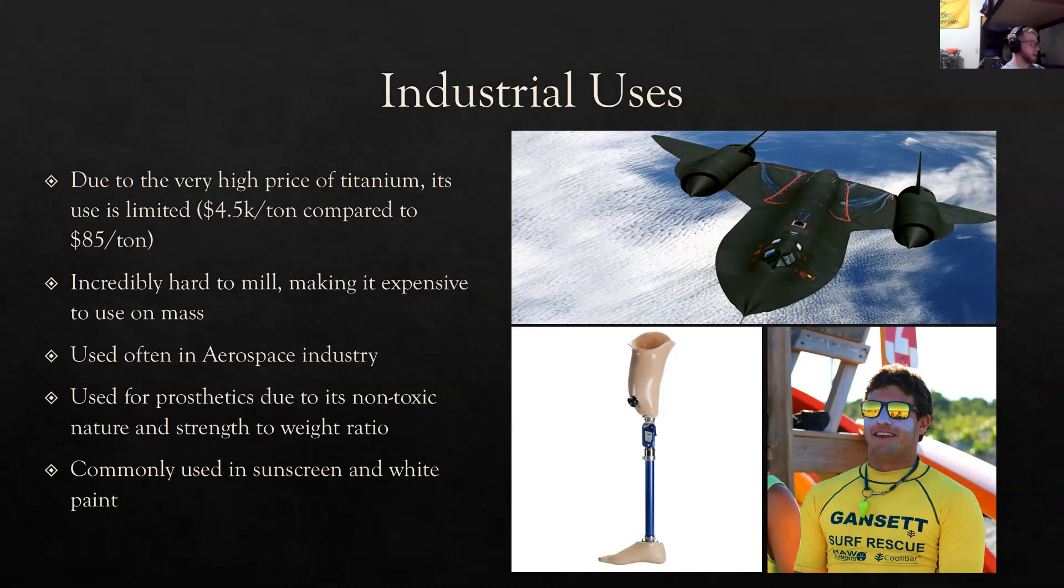Another big use for titanium is the use for prosthetics. Due to the non-toxic nature of titanium, it can come into constant contact with human skin without any fear of causing harm or poisoning to the user. A final use of titanium is in sunscreen and white paint, where it is used as a pigment and a fantastic blocker of UV rays from the sun.